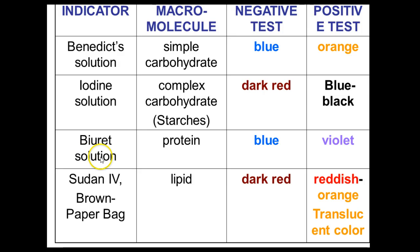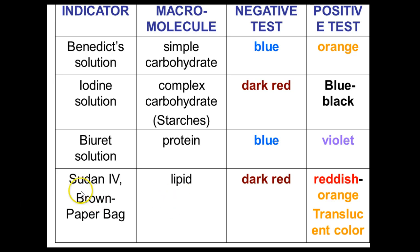We have biuret solution, which tests for proteins. A negative test will look blue, and a violet or purple will be a positive test. And then we have two tests for lipids: Sudan 4 and the brown paper bag test.